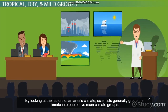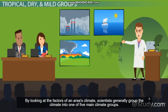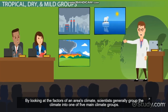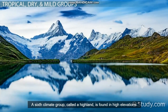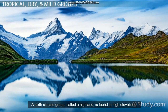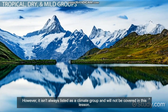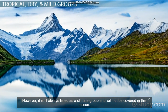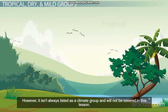By looking at the factors of an area's climate, scientists generally group the climate into one of five main climate groups. A sixth climate group called a highland is found in high elevations. However, it isn't always listed as a climate group and will not be covered in this lesson.